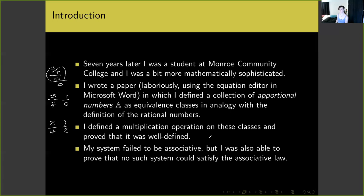My system failed to be associative even though it had a well-defined operation, but I was able to prove that no such system could satisfy the associative law. That means I hadn't failed in some sense to produce such a system — it wasn't so much a failure on my part as it was a failure of such a thing to exist. No matter how hard I tried, I would not have been able to produce such an algebraic structure because it cannot exist. That was a bit of a relief to discover.